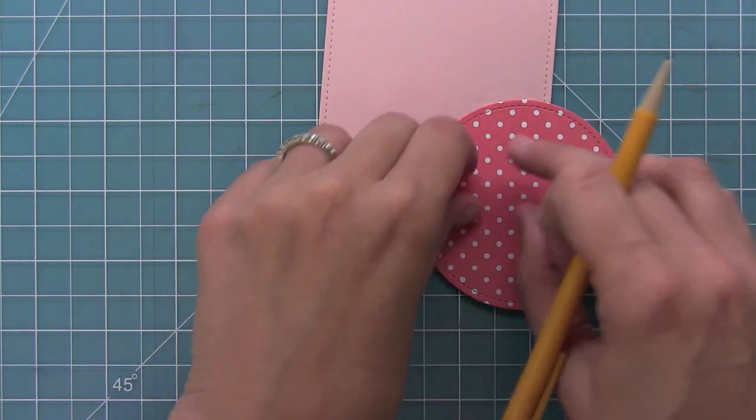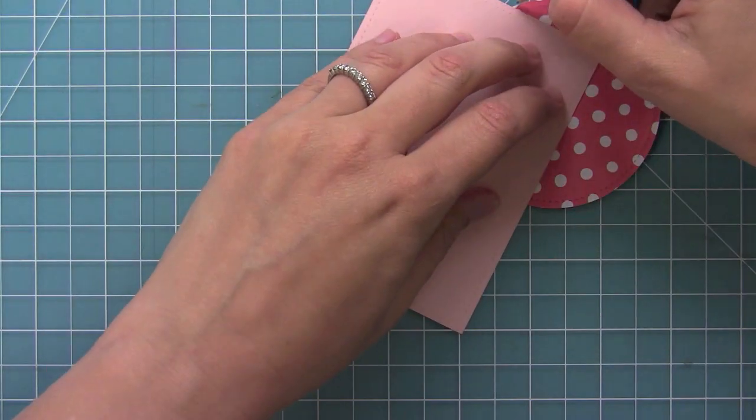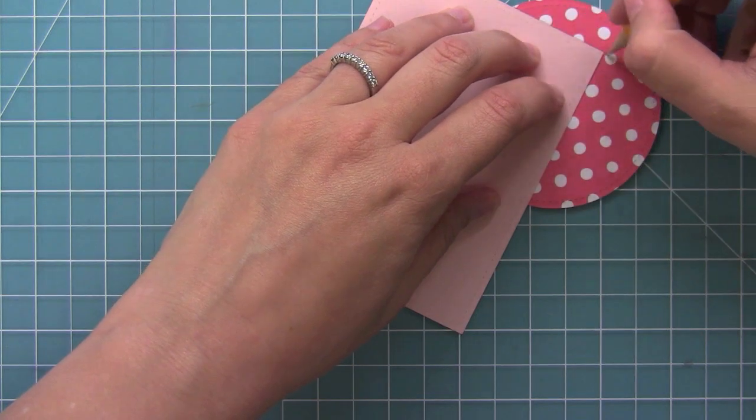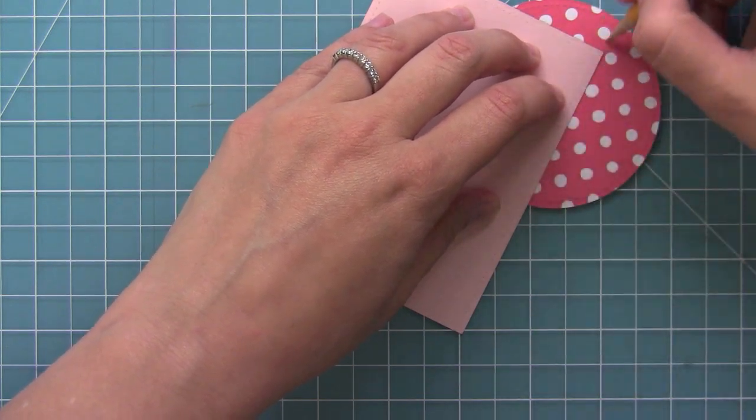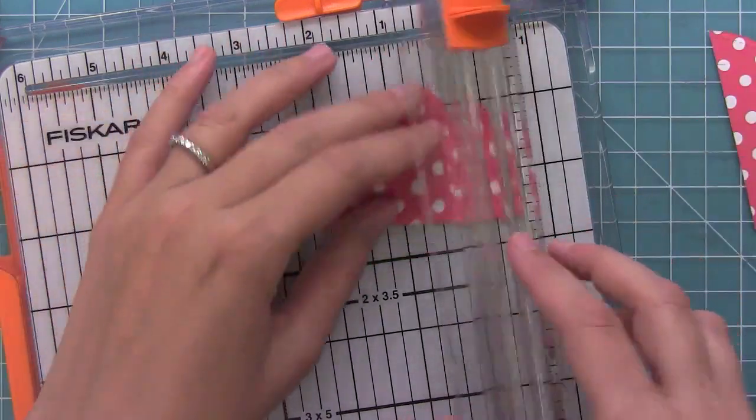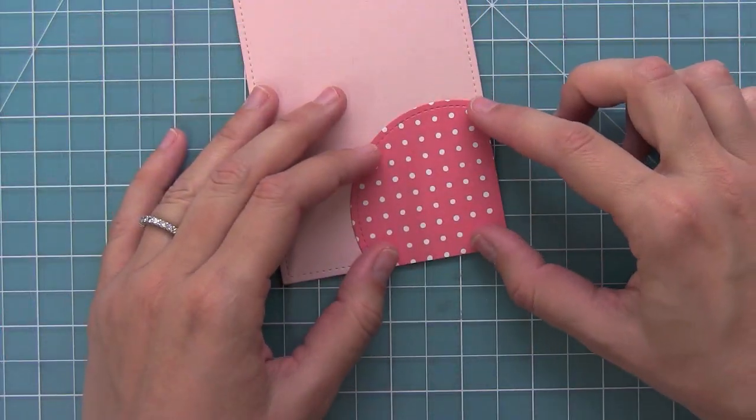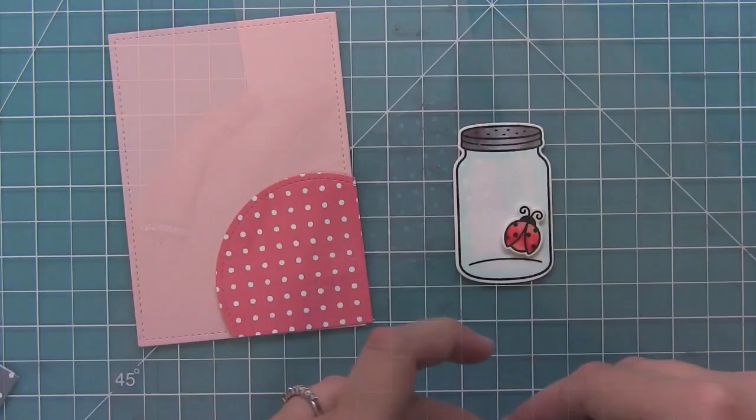Now I want this circle to just be on part of the card so I'm placing it where I'd like it to be and then just using the back of this cardstock there to trace so that I know where to trim my little piece off. So I'll go ahead and just trim those and then you'll see it's going to be a perfect circle there in the bottom corner of the card.